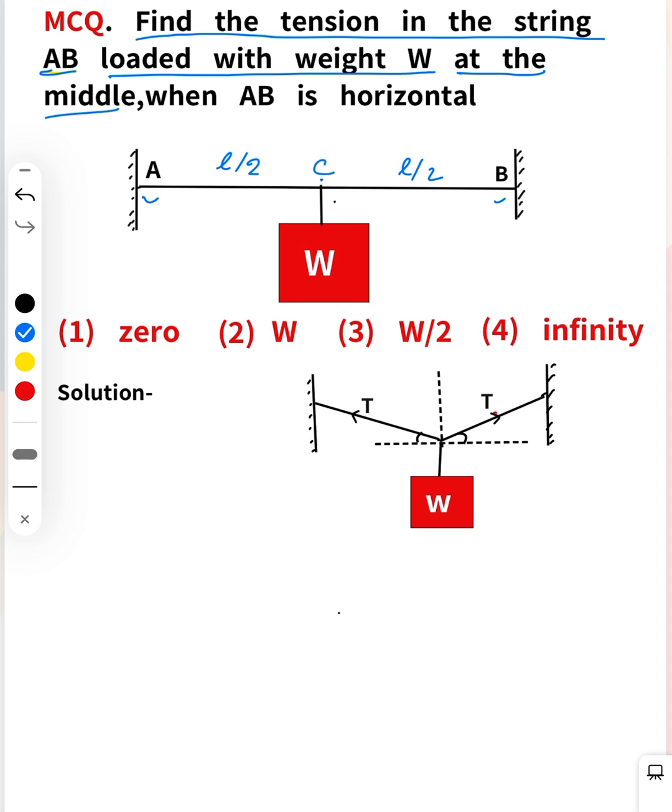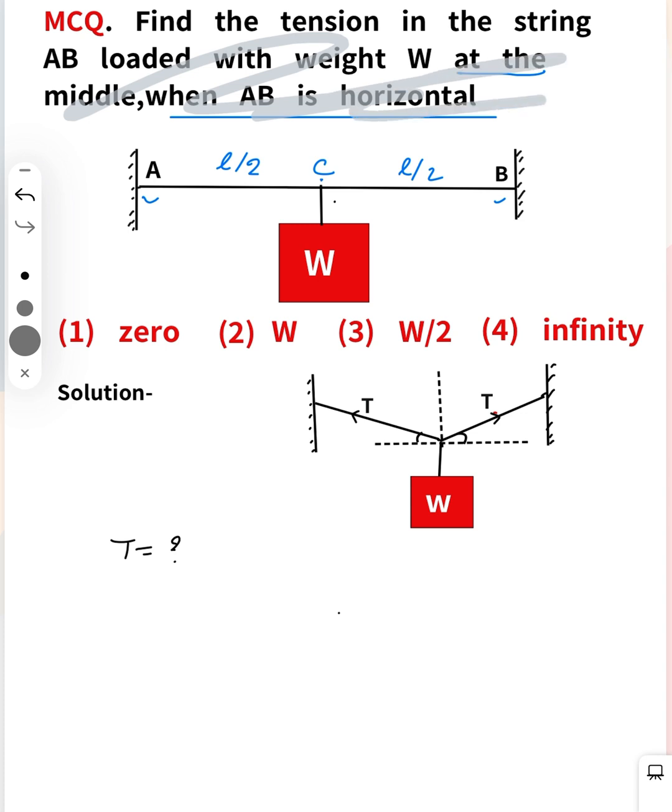Our goal is to find T when AB is horizontal. So how can we do it? First of all, make a free body diagram of this block.